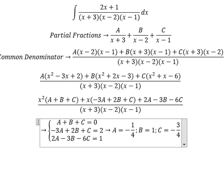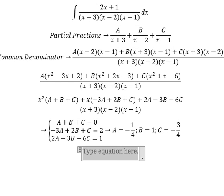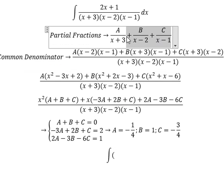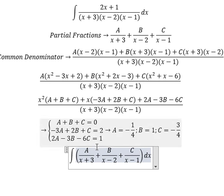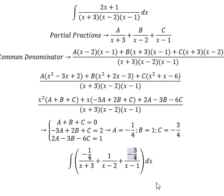So we put these values back in. A is negative 1 over 4, B is 1, C is negative 3 over 4. Now we can get the final answer.